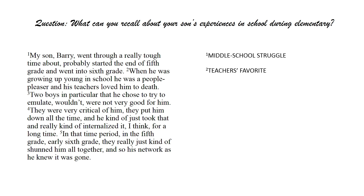For number three: 'Two boys in particular that chose to try to emulate, who were not very good for him' — the word emulate means to copy or imitate, so we put 'bad influence.' For number four: 'They were very critical of him, they put him down all the time and he kind of internalized it for a long time' — the code for that would be 'taunts.' And for the fifth statement, 'in the fifth grade, early sixth grade, they really just kind of shunned him altogether, so it's not the world as he knew it — it was gone' — the code would be 'the lost boy.'